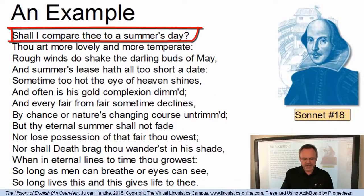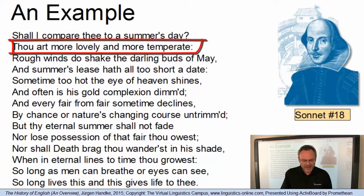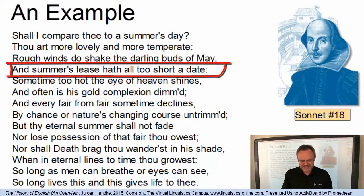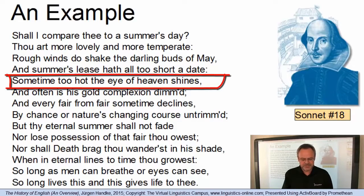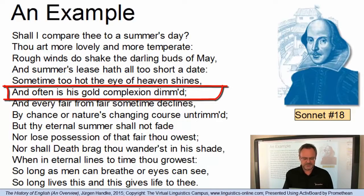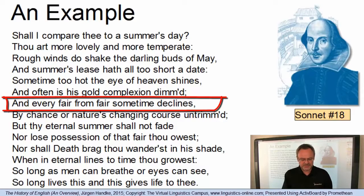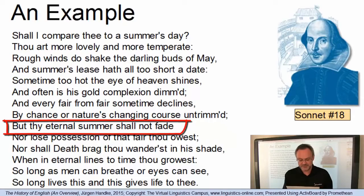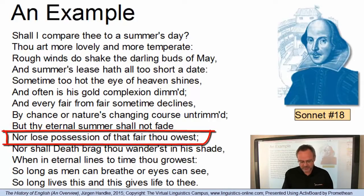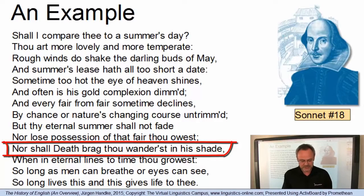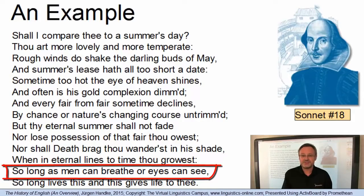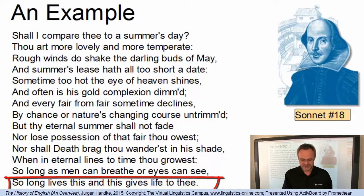Here is Sonnet Number 18: 'Shall I compare thee to a summer's day? Thou art more lovely and more temperate. Rough winds do shake the darling buds of May, and summer's lease hath all too short a date. Sometime too hot the eye of heaven shines, and often is his gold complexion dimmed; and every fair from fair sometime declines, by chance or nature's changing course untrimmed. But thy eternal summer shall not fade, nor lose possession of that fair thou hast, nor shall death brag thou wand'rest in his shade, when in eternal lines to time thou grow'st. So long as men can breathe or eyes can see, so long lives this, and this gives life to thee.'